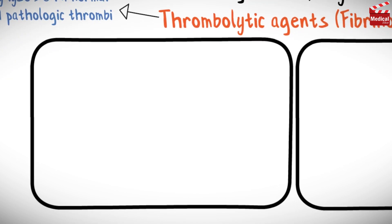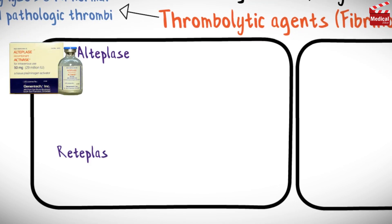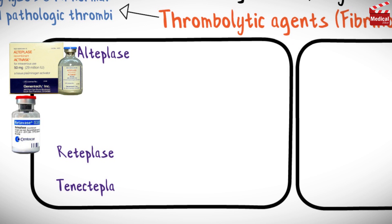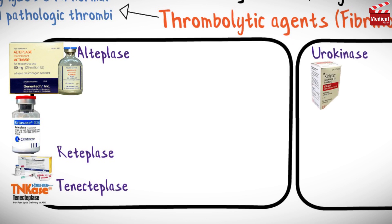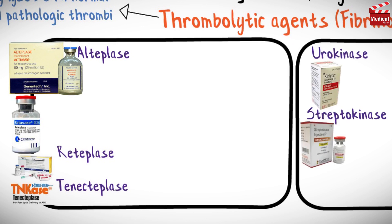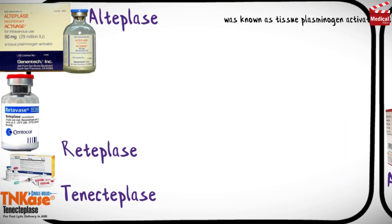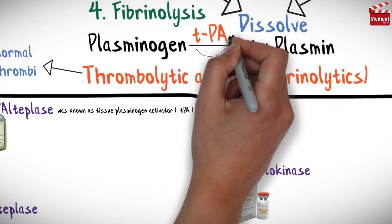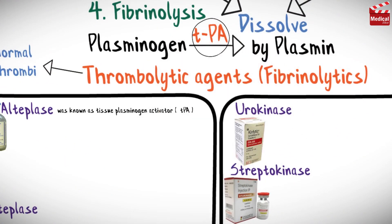This category of drugs includes alteplase, reteplase, and tenecteplase; urokinase; streptokinase; and anistreplase. Alteplase was known as tissue plasminogen activator, or TPA.